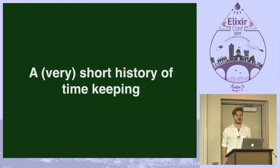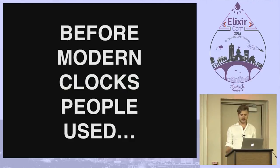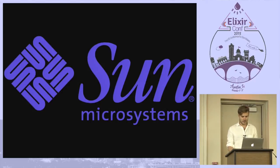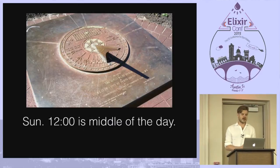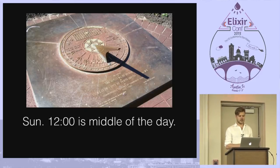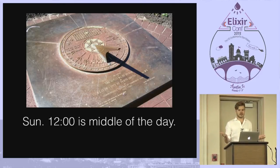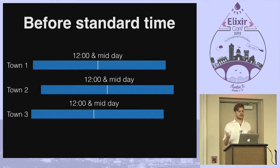So first, a very short history of timekeeping. Before we had modern clocks, people lived in caves — they didn't have a watch. So they used, of course, the sun. You had solar clocks. For a long time the day has been divided into two parts of 12. You looked at the sun when it was in the middle of the sky — that's the middle of the day. It used to be that each town had their own time.